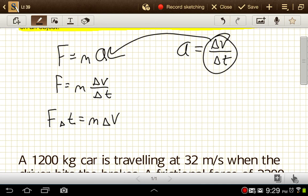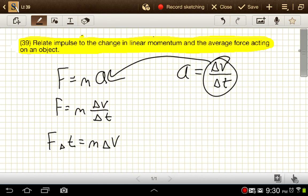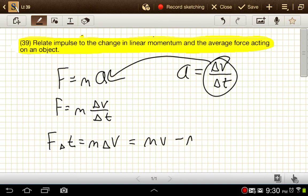Now m·Δv is another way of writing mass times velocity minus mass times initial velocity. This is just the momentum at some final moment minus the initial momentum. So this term represents the change in momentum.